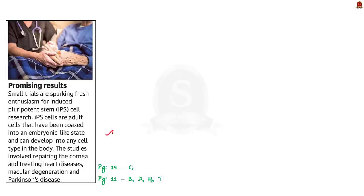This next news article talks about induced pluripotent stem cells. This is in news because recent studies have revealed that trials on induced pluripotent stem cells have given better results. In this context, we will learn about stem cells, their types, and specifically about induced pluripotent stem cells and their significance.